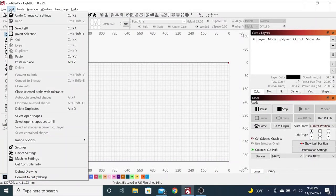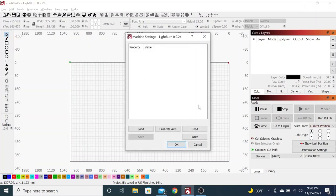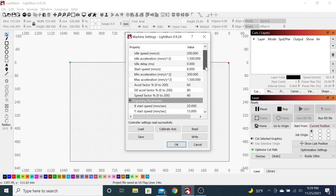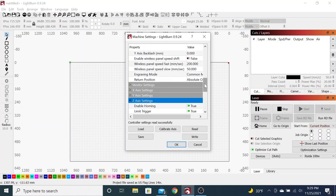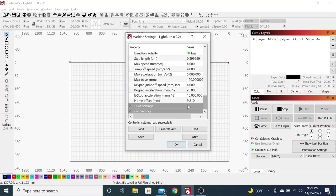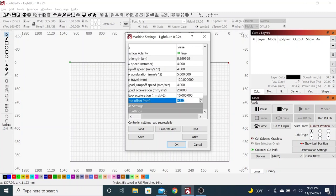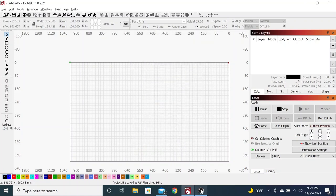Back over at Lightburn, and we're going into the machine settings, coming down here to Z-axis. And then we just went and added four millimeters to that, so 13.21. Going to go ahead and write, and okay.